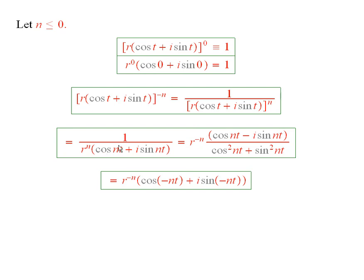And then here, I'll multiply on the top and bottom by cosine of nt minus i sine of nt. If we do that, then we get cosine squared plus sine squared in the bottom, and in the top we get this.